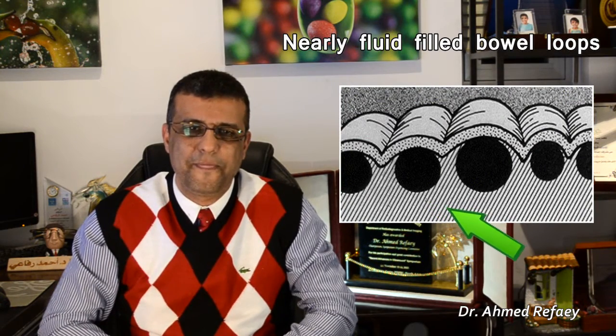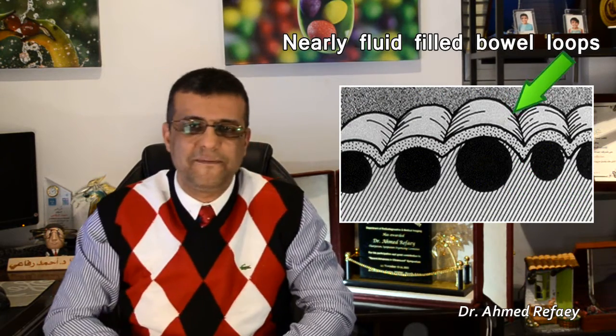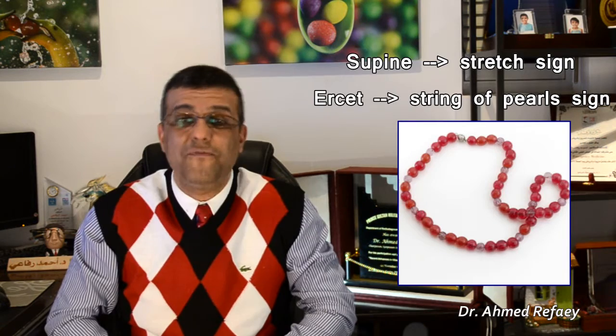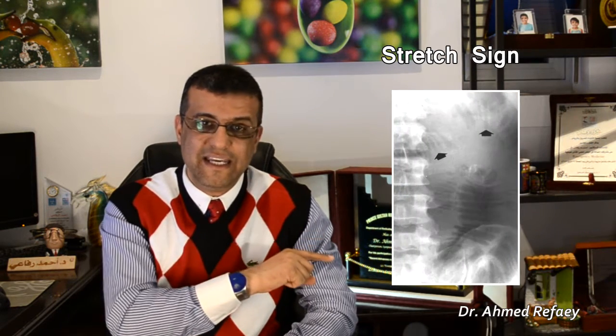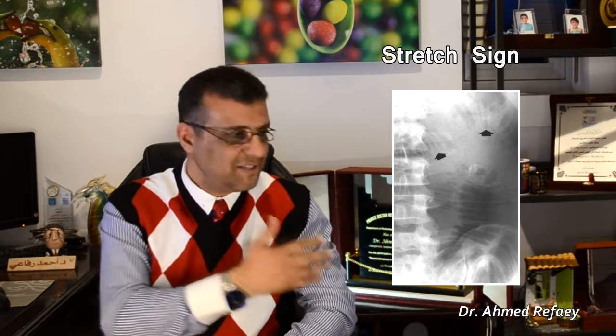In cases of small bowel nearly filled with fluid, except for small air bubbles trapped between the folds of the valvulae conniventes, as seen in this drawing — if the patient is imaged in supine position, this trapped air gives a sign known as the stretch sign. On supine abdominal x-ray, it appears as slit-like lucencies on a background of a gasless abdomen, as seen in this image.